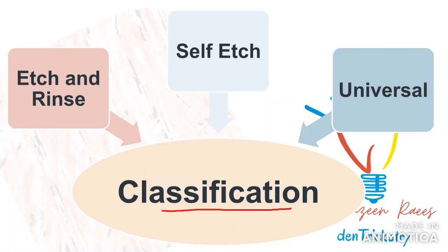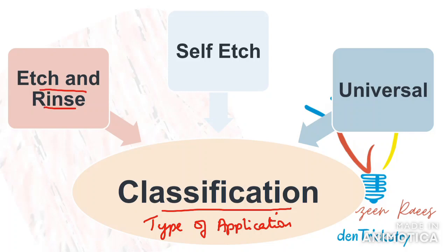First, we'll begin with the classification. There are bonding agents classified according to generations, which I'm sure most of you are aware of, from the 1st to 8th generation. However, the classification that I will be elaborating on is the one based on the type of application in the clinic, because that is a more practical classification. So this includes etch and rinse adhesives, self-etched adhesive and universal adhesives.